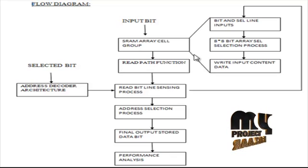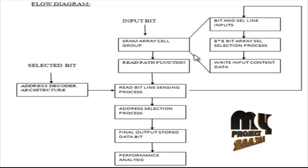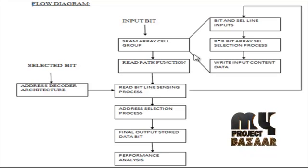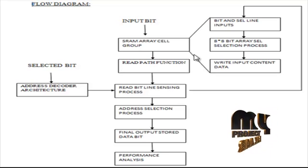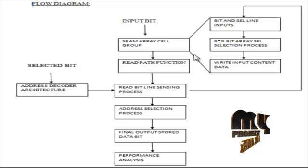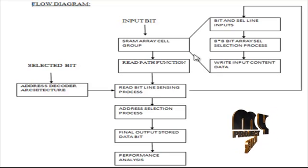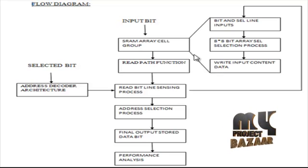Then the read path function is passed. The read path function is selected by the selected bit address decoder architecture. We develop the decoding architecture for row and column selection control, and we develop the address selection decoder and column selection decoder. The two selections are set and the bit is set for the read bit sensing process, which activates the overall SRAM cell and analyzes each SRAM cell.